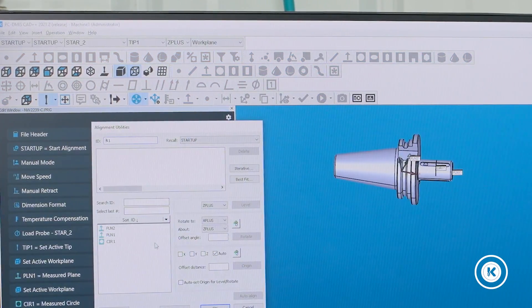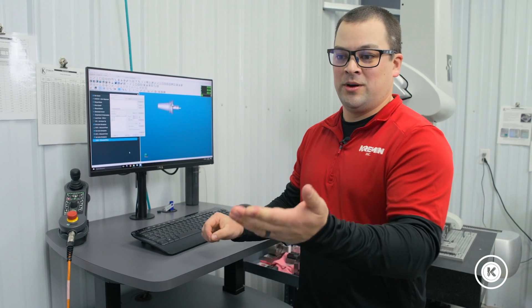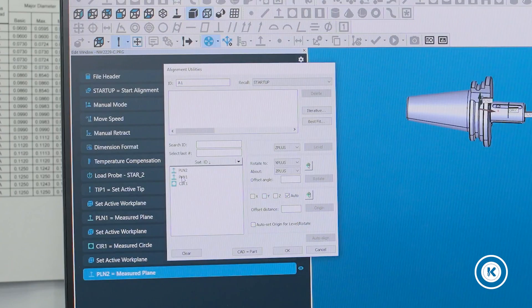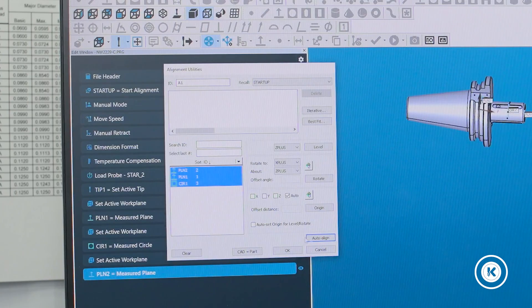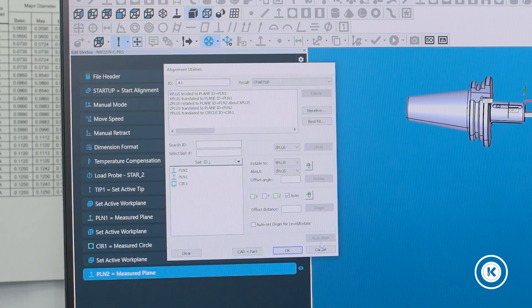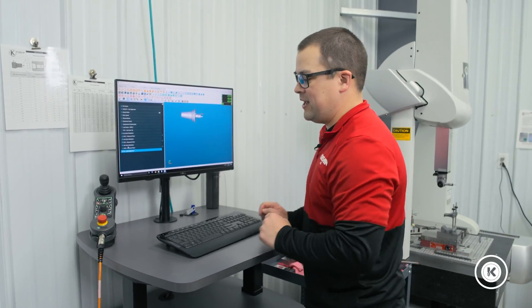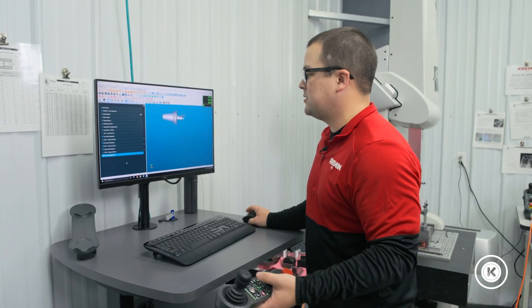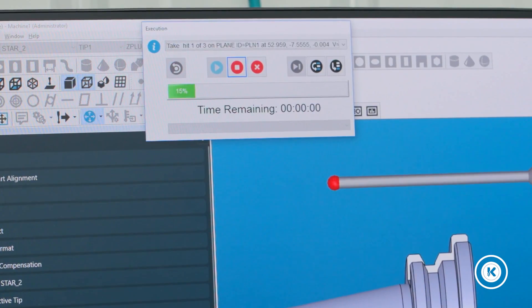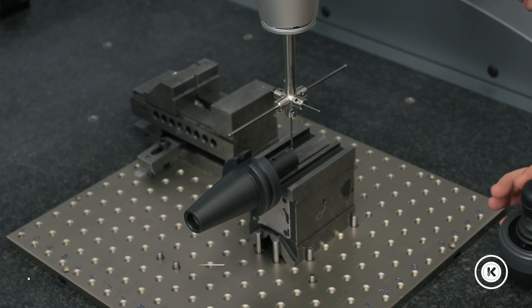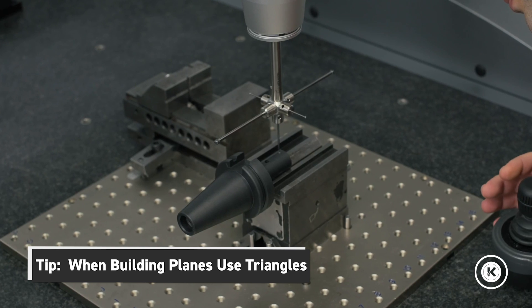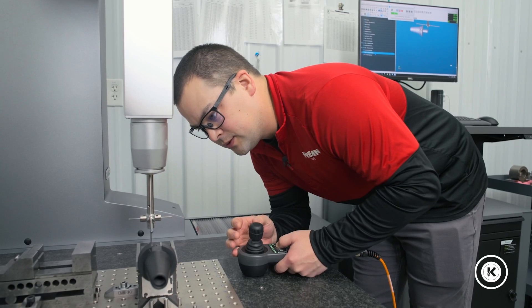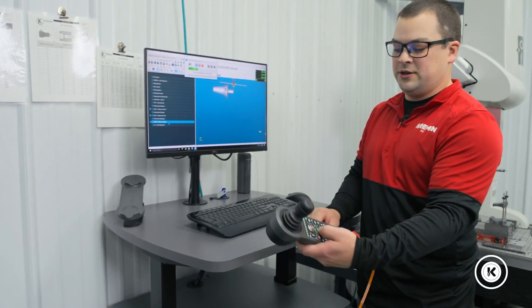How you look at the part is how the computer is going to be looking at the part as well. Now that we have some of those features touched off, we're going to align this part. This initial alignment is just telling the machine where the part is going to be in the space and how it's going to be oriented. We want the machine to come in and touch the part the right way and not crash into it—that doesn't make the boss happy. Select those features. I like to use the auto align feature, especially for initial alignment.